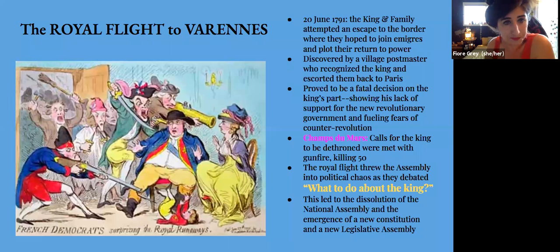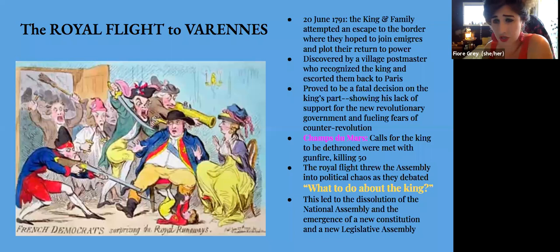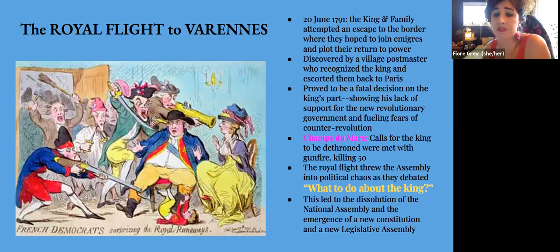The king and family tried to escape to Varennes but were caught — discovered by a village postmaster who recognized the king. This proved a fatal decision: it showed his lack of support for the revolutionary government and fueled fears of counter-revolution. At the Champ de Mars, calls for the king to be dethroned were met with gunfire — fifty were killed. The royal flight threw the assembly into political chaos, debating what to do about the king, leading to the dissolution of the National Assembly and the emergence of a new constitution and a new Legislative Assembly.